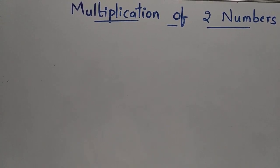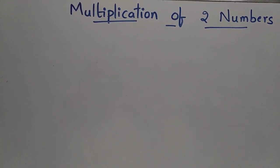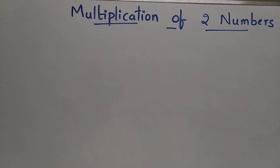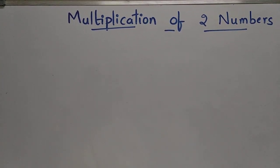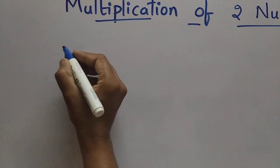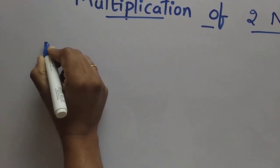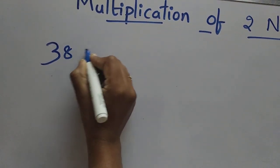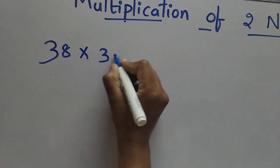Hello everyone. Today we are going to learn the multiplication of 2 numbers. The first example is we can multiply 38 with 35.